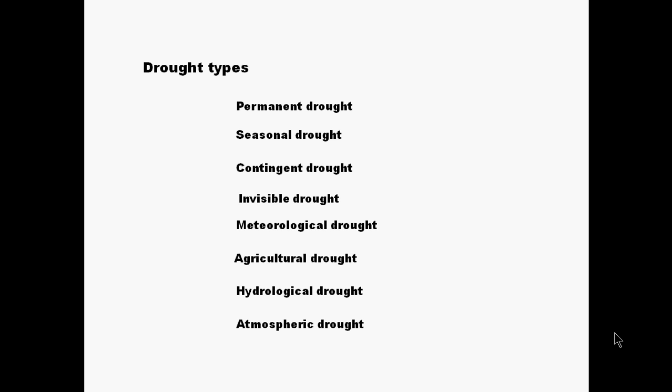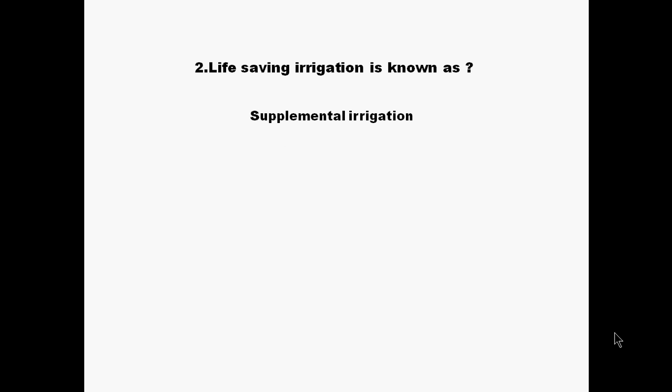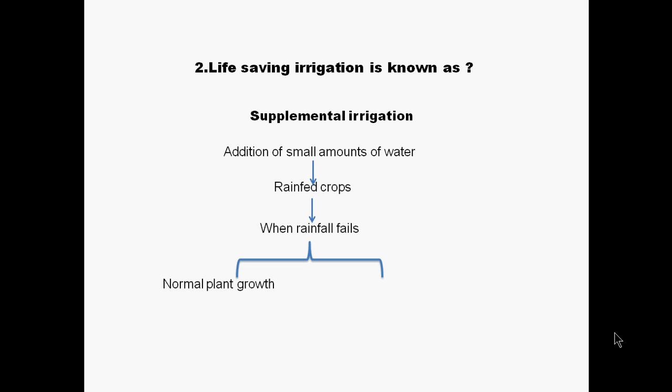The second question asks: life-saving irrigation is known as what? The answer is supplemental irrigation. Supplemental irrigation is the addition of a small amount of water to a rainfall-dependent crop when rainfall is failing. The basic objectives are to normalize plant growth and to achieve a stabilized or improved yield.